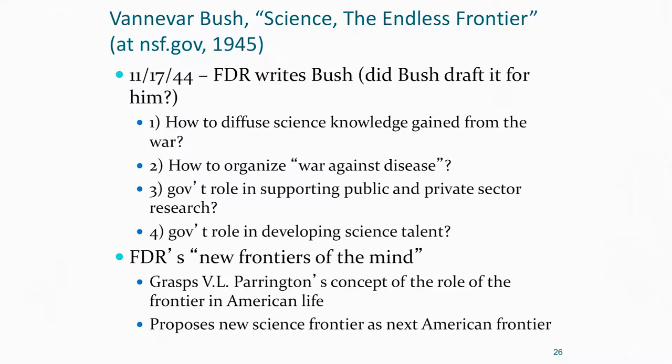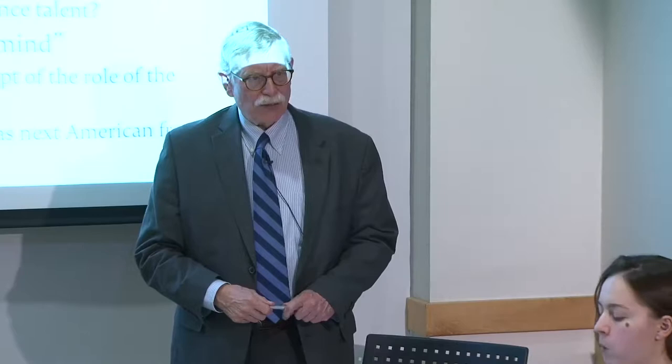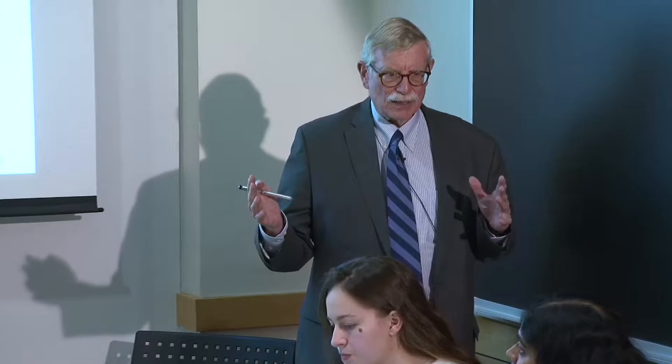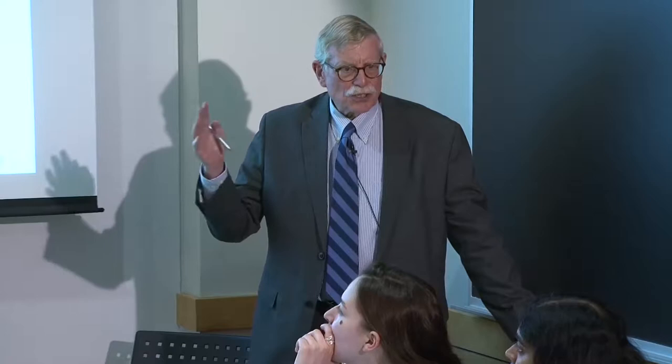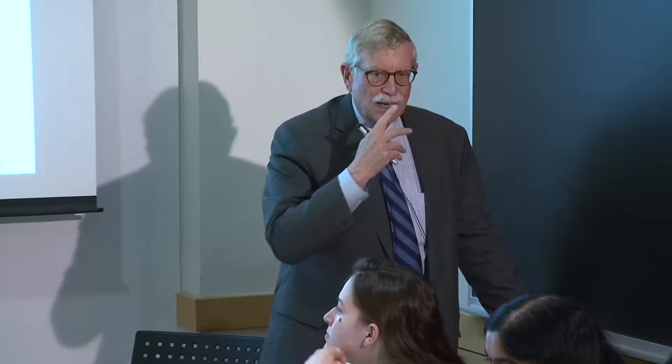He calls his work Science the Endless Frontier, appealing to an interesting historical strain. One of the great historians of the first half of the 20th century, Vernon Parrington, wrote about the end of the frontier and its effect on American history and society. His point is that the structured, class-ridden society breaks down at the American frontier — and the entire country was a series of advancing frontiers historically.